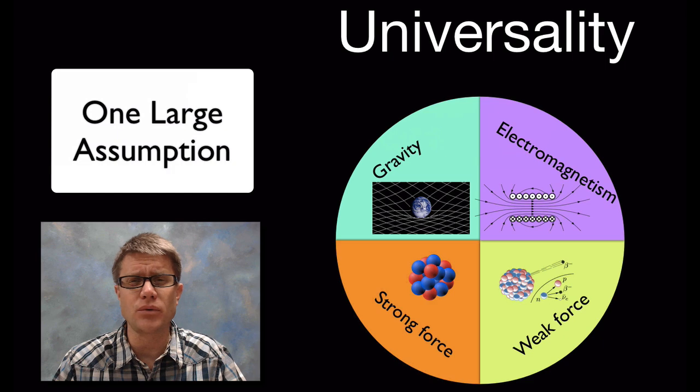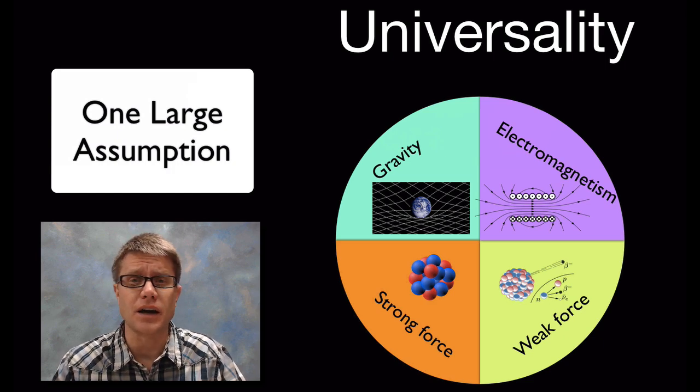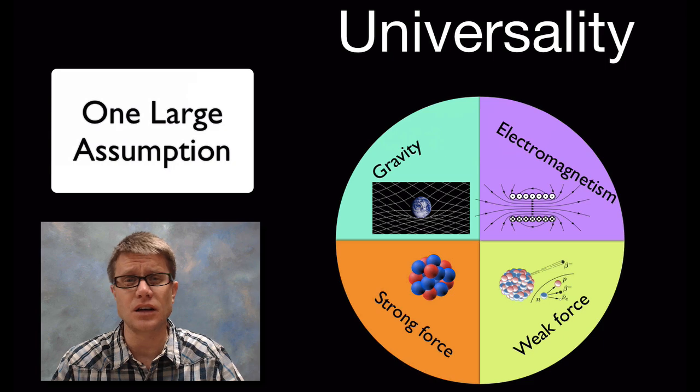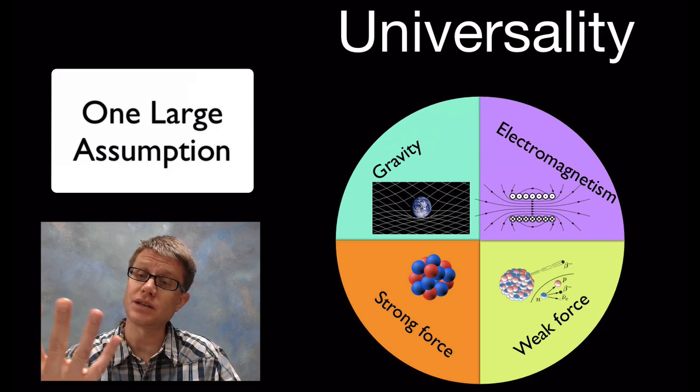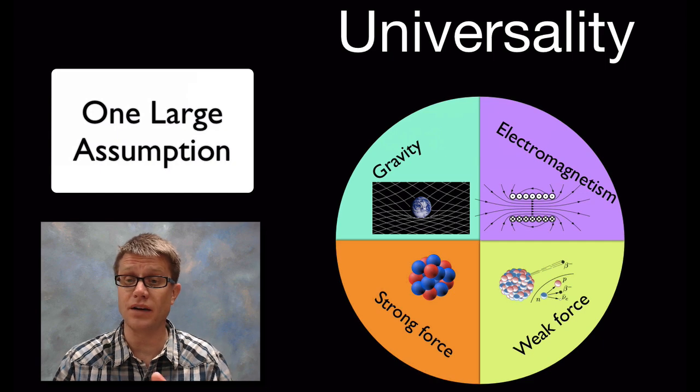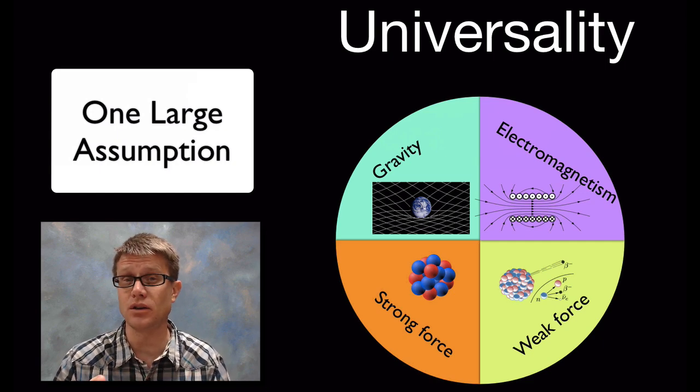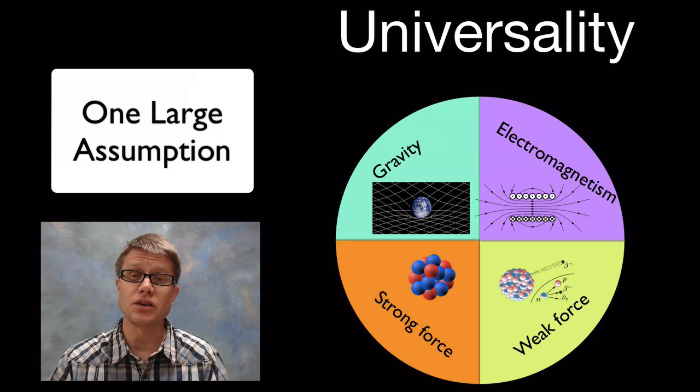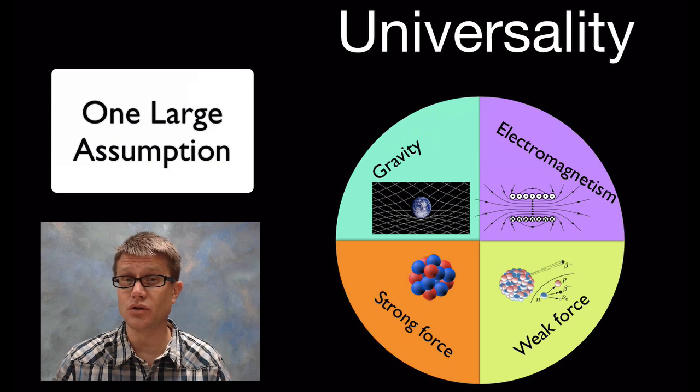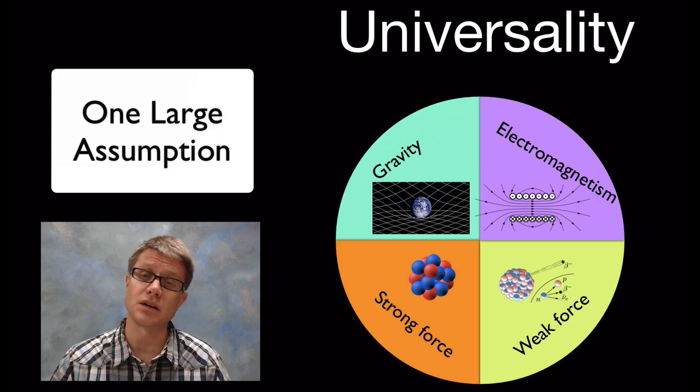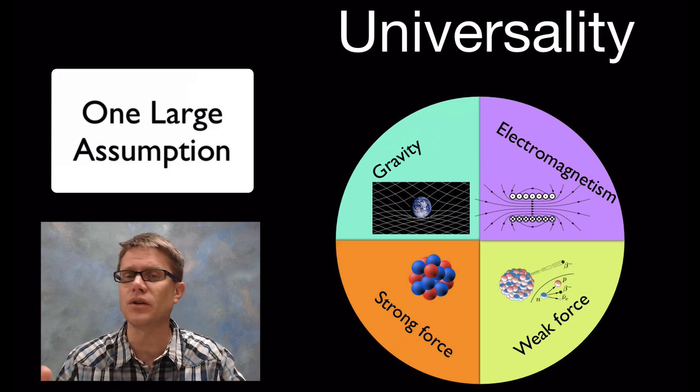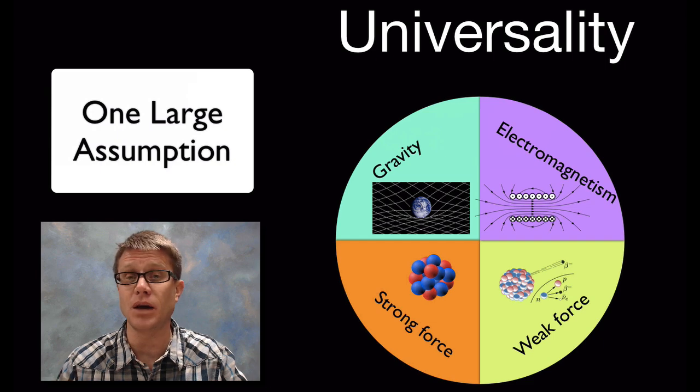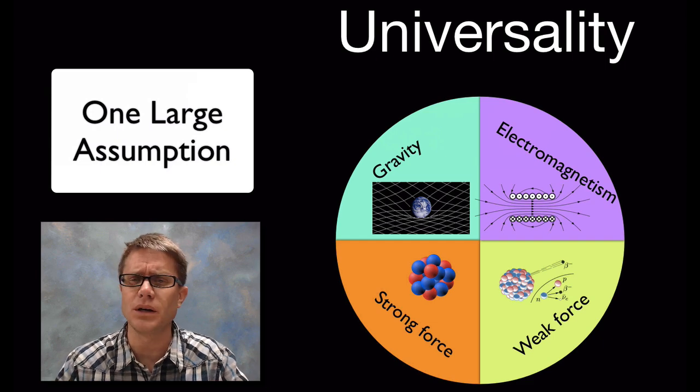One thing we want to make sure when we're talking at this root level of cause and effect is this idea of universality, an assumption that we make. In the universe there are four basic forces: gravity, electromagnetism, and the strong and weak nuclear forces. We're going to assume that the universe is the same here as it is everywhere, assume universality that these forces are the same everywhere. That's actually a pretty big assumption.